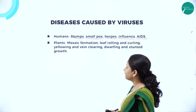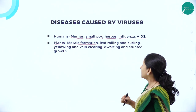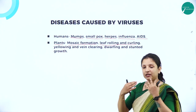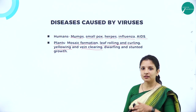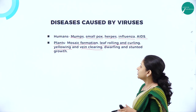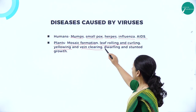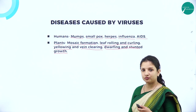Talking about diseases in plants: viruses can cause mosaic formation in the leaves — that is, yellow and white patches on the leaves. They can also make the leaf roll and curl; the edges of the leaf will start to curl. They can cause yellowing of the leaf and vein clearing — when you look at the leaf, the veins will lose their green color and start to appear clear or colorless. They can also cause dwarfing and retard the growth of the plant, causing stunted growth.